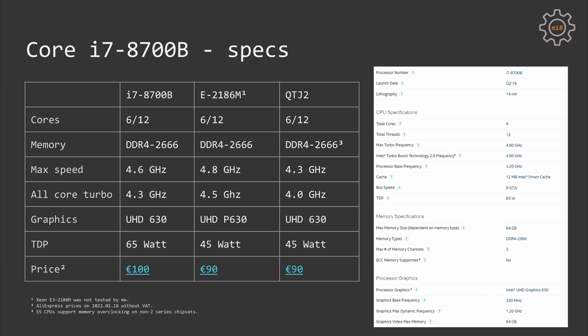Let's take a look at the technical specification of our today's hero, Core i7-8700B, and compare it to some other mutants. This CPU is very similar to the QTJ2 Mutant which I tested some time ago on my channel. These CPUs have 6 cores and 12 threads. Maximum memory frequency is DDR4-2666. QTJ2 is an engineering sample CPU and you can overclock memory beyond DDR4-2666 using the cheapest H110 or H310C chipsets, but with i7-8700B you need a Z-series motherboard. Maximum turbo frequency with i7 is 4.6GHz versus 4.3GHz with QTJ2. Maximum all-core turbo is 4.3GHz and 4.0GHz respectively. Both come with integrated graphics Intel UHD 630. i7-8700B is limited to 65W TDP while QTJ2 is limited to 45W TDP.